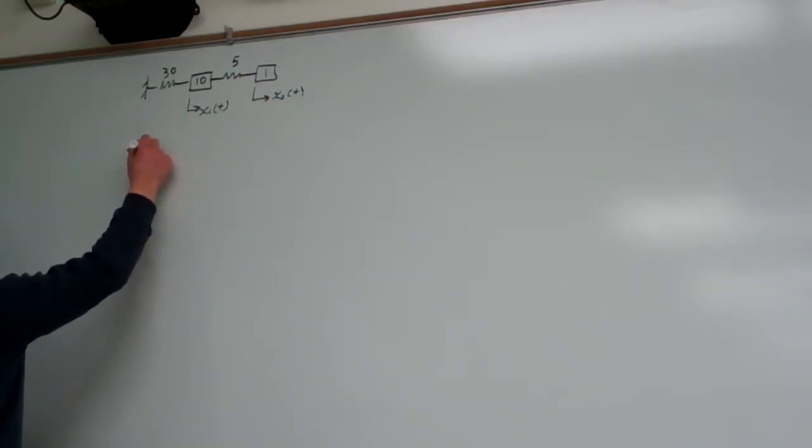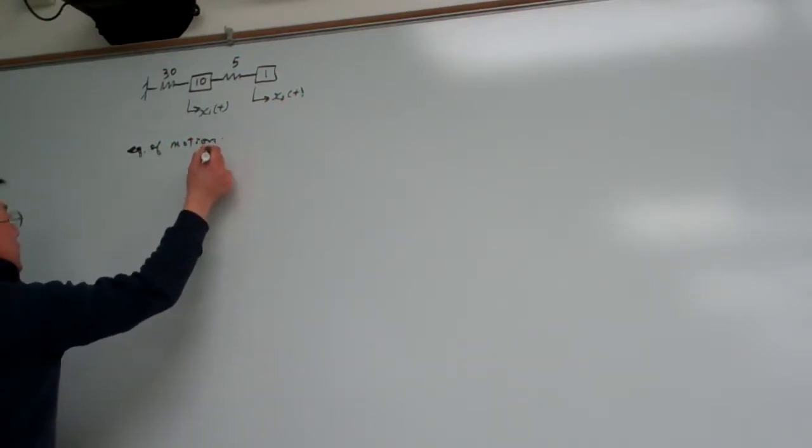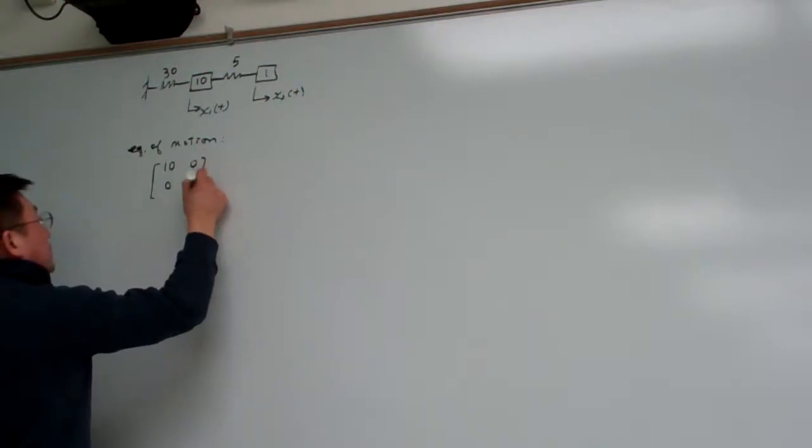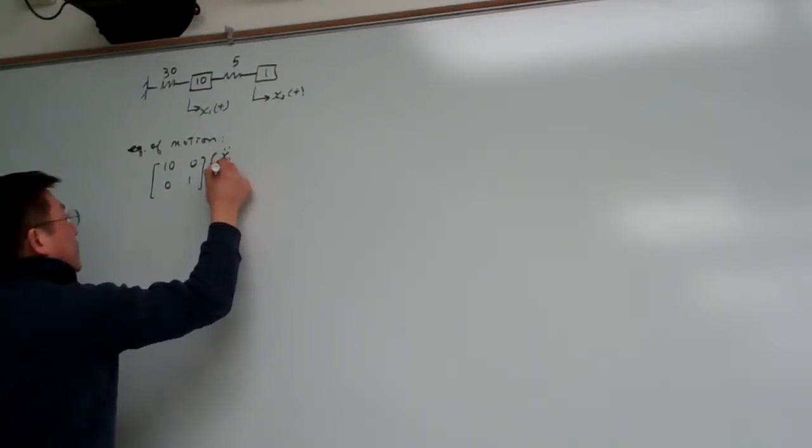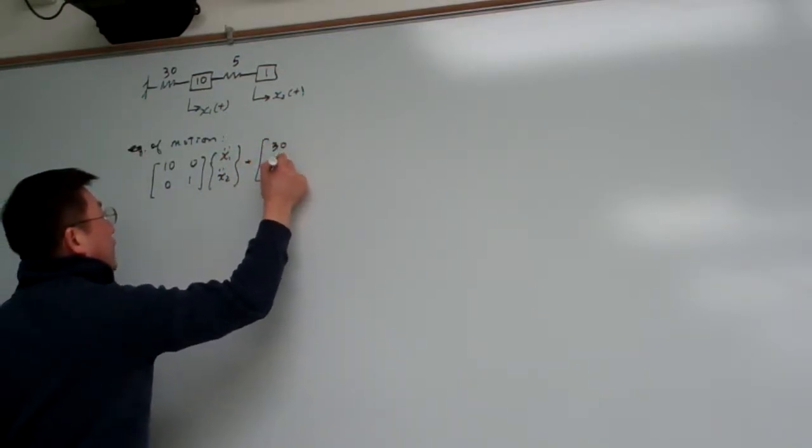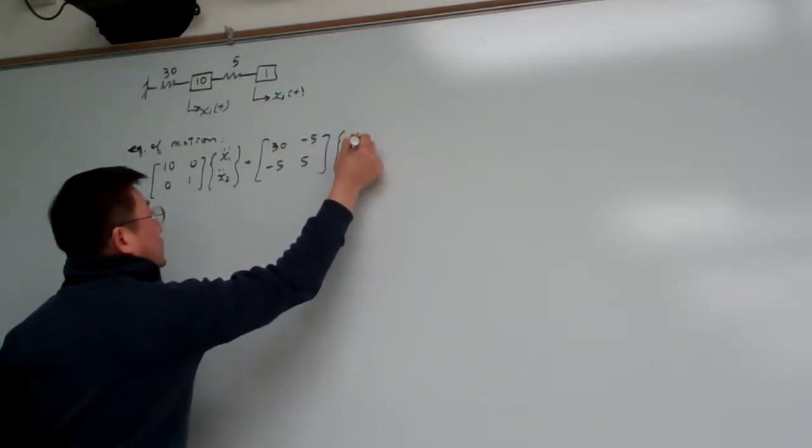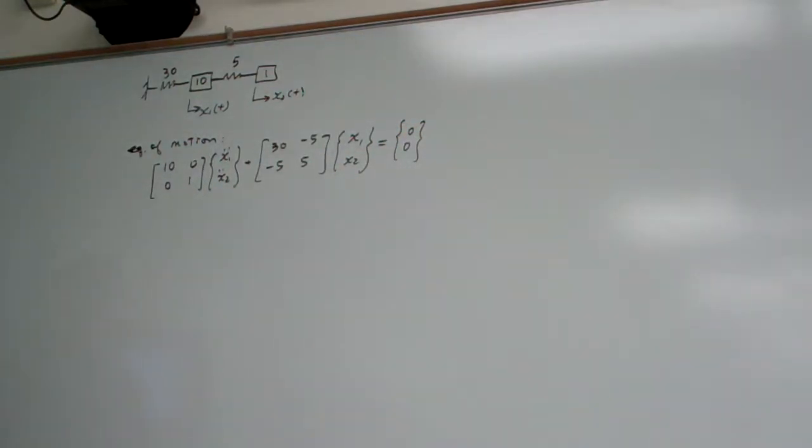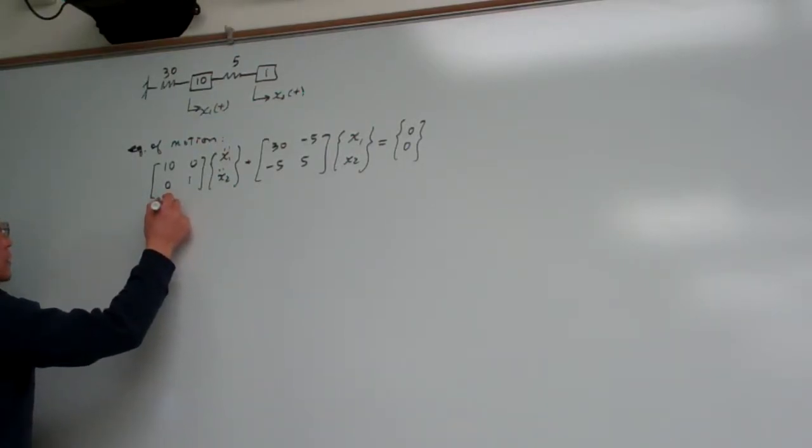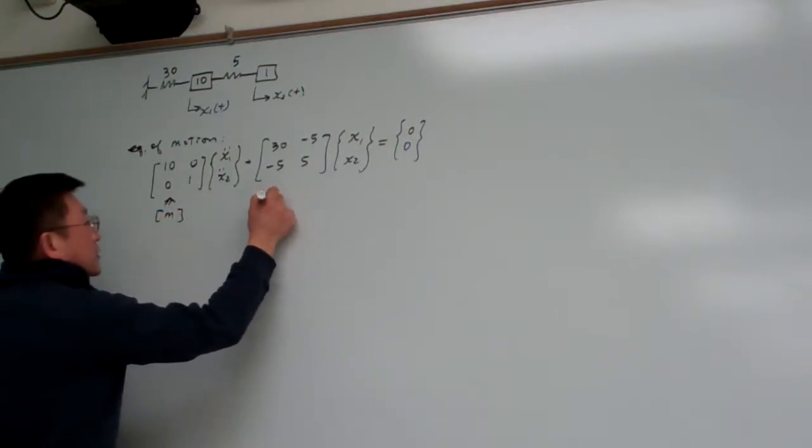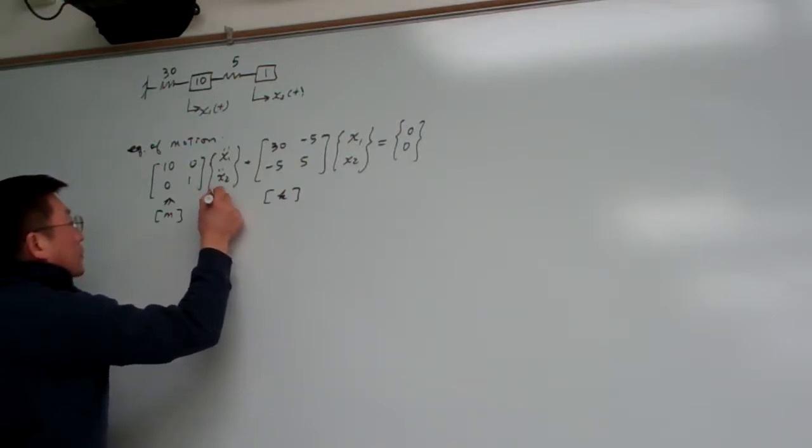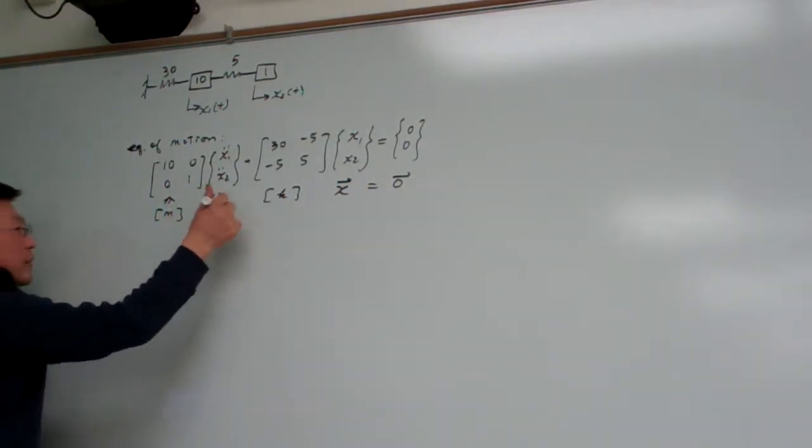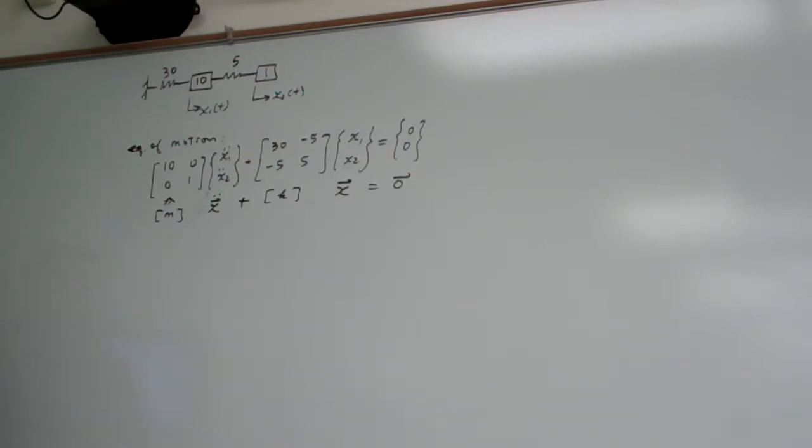So here, let me rewrite here. So the equations of motion basically is [10, 0; 0, 1] times [x1 double dot; x2 double dot] plus [30, -5; -5, 5] times [x1; x2]. And for free vibrations equal to [0; 0]. And this is what we call the M matrix. And this is the K matrix, and this is our X double dot, and this is vectors. If we write it into matrix form, it would be like this.